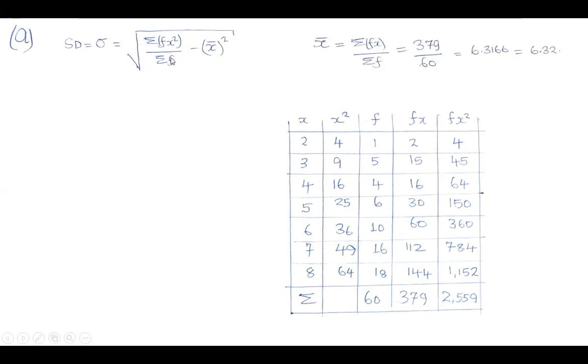And then we can now calculate the standard deviation. We'll have all the parameters, so it's just substitution. We substitute: summation of fx squared is 2,559 from the table. Then summation of frequency, the total frequency is sixty, minus the square of the mean. The mean is 6.32, as we just calculated. When you simplify this using the calculator, you have 2.7076. Then you find the square root, which is 1.6455. Rounding off to two decimal places is 1.65. That is the standard deviation.